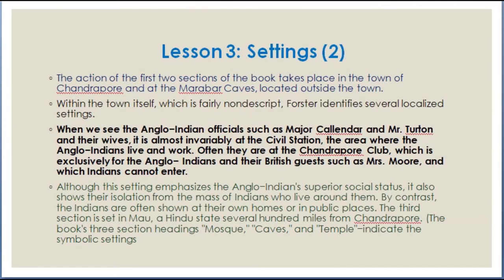Novel Settings: The action of the first two sections of the book takes place in the town of Chandrapur and at the Marabar caves, located outside the town. Forster identifies several localized settings within the town. When we see the Anglo-Indian officials such as Major Callender and Mr. Turton and their wives, it is almost invariably at the civil station, the area where the Anglo-Indians live and work. Often they are at the Chandrapur Club, which is exclusively for the Anglo-Indians and their British guests, and which Indians cannot enter. Although this setting emphasizes the Anglo-Indians' superior social status, it also shows their isolation from the mass of Indians who live around them.